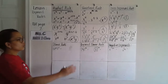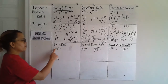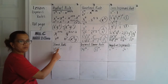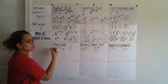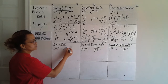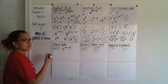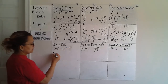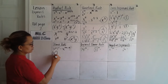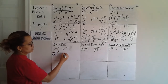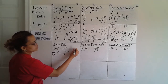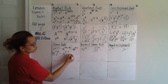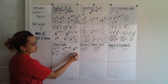Next, power rule. If a power is raised to another power, write the base and multiply the exponents — m times n. Example: x squared raised to the 4th power. That's x to the 2 times 4, which is x to the 8th power.